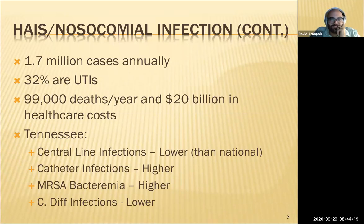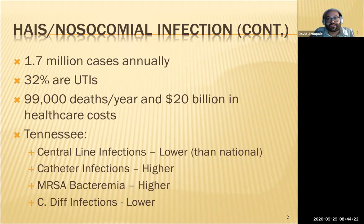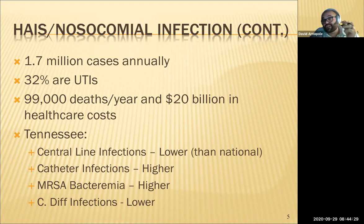There are significant statistics on death from infections — it's the number one cause of death inside hospital settings. In Tennessee, central line infections are technically lower, but there is a higher risk of death from catheters and MRSA.